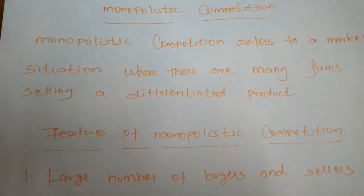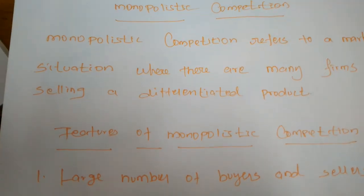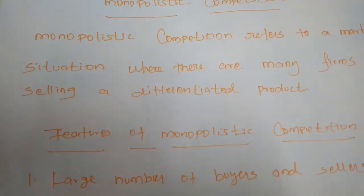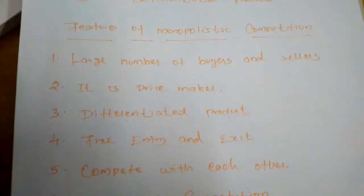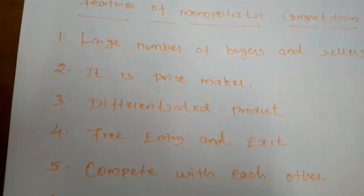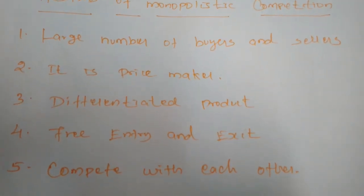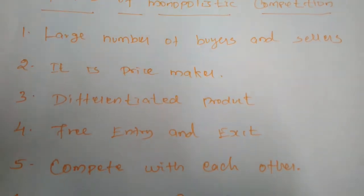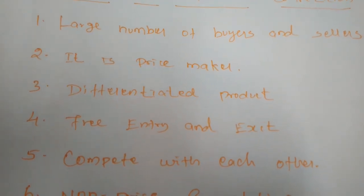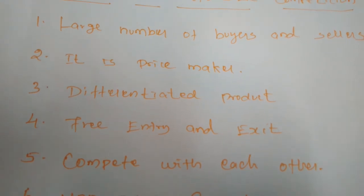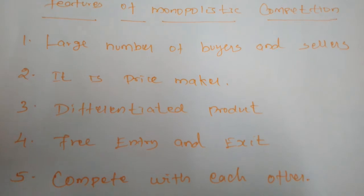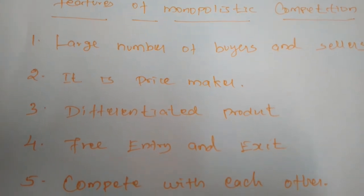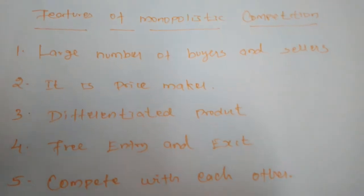No single firm has the power to produce the exact same product, but by making little changes it can bring a product to market. In monopolistic competition, there are a large number of buyers and many sellers throughout the world — consumers use products like soap, shampoo, powders, and cosmetic goods. Compared to buyers, the number of sellers may be low, but there are large numbers of buyers and many sellers.